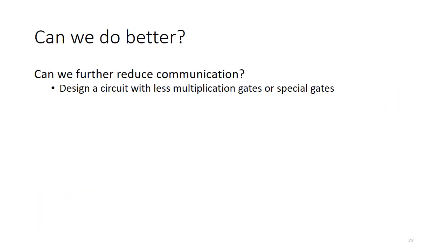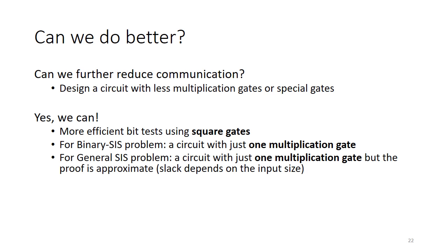The outlined solution only uses standard multiplication gates. An obvious question is whether one can do better with fewer multiplication gates or special gates. We show this is possible. First, bit tests can be done using square gates instead of multiplication gates, where square gates have less overhead in the preprocessing stage. Furthermore, for the binary SIS problem, we show a circuit that uses just one multiplication gate instead of M. For general SIS, we show a circuit with one multiplication gate where the proof is approximate — meaning the bound is slightly larger than beta, which is acceptable as many proofs in the SIS setting only give approximate solutions. We also show a solution for general SIS that does not use any multiplication gates whatsoever.